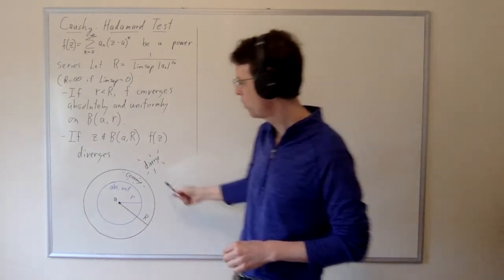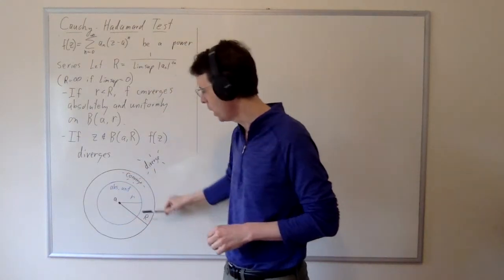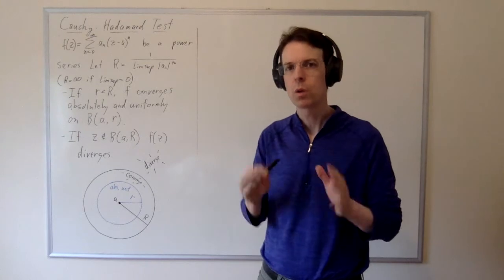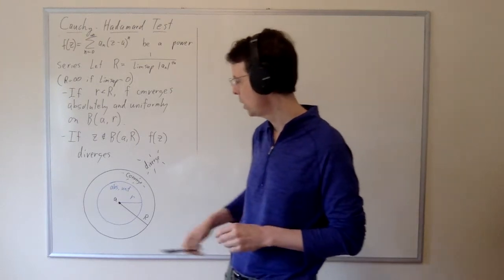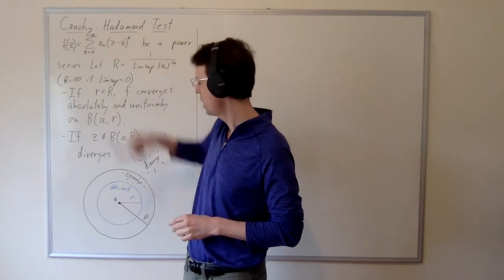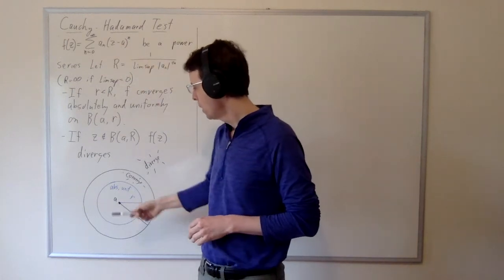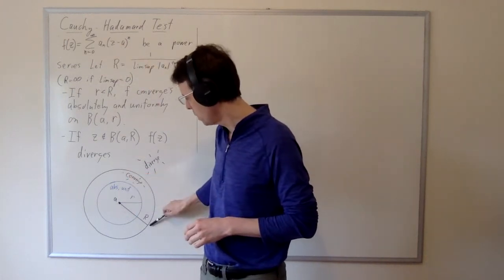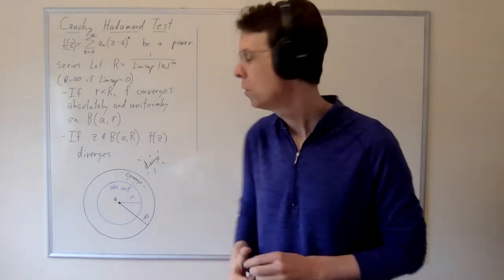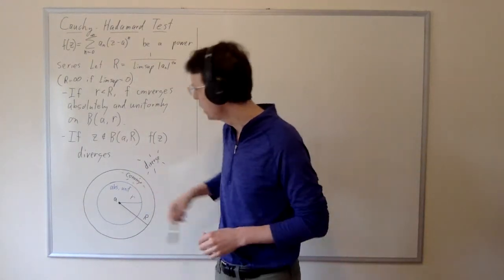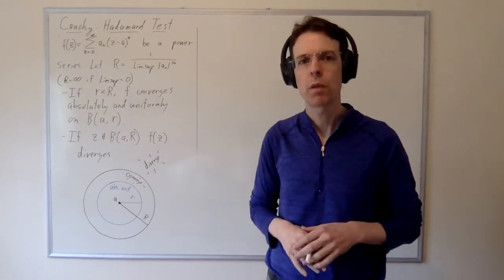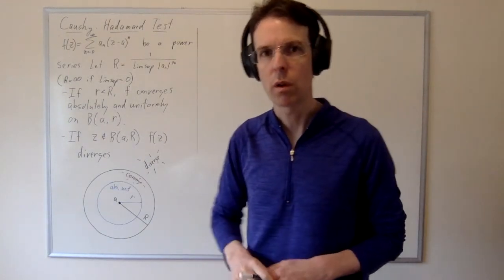Let me refer to the picture straight away. We will get a ball on which the series converges in the complex plane. That ball will be centered at the point a — the same a in the power series — and it will have a radius of cap R. So this R is going to be called the radius of convergence. We get convergence on the interior of that ball and divergence on the exterior.